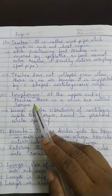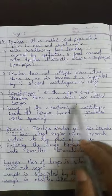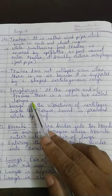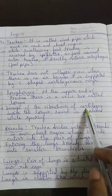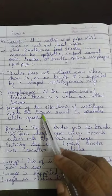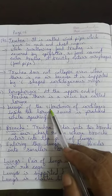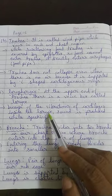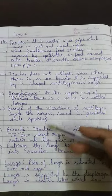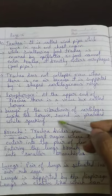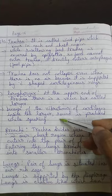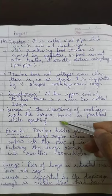At the upper end of the trachea is the voice box called the larynx. Inside the larynx there are cartilages arranged in series. When air strikes these cartilages, they vibrate, and because of that vibration, sound is produced when we speak.